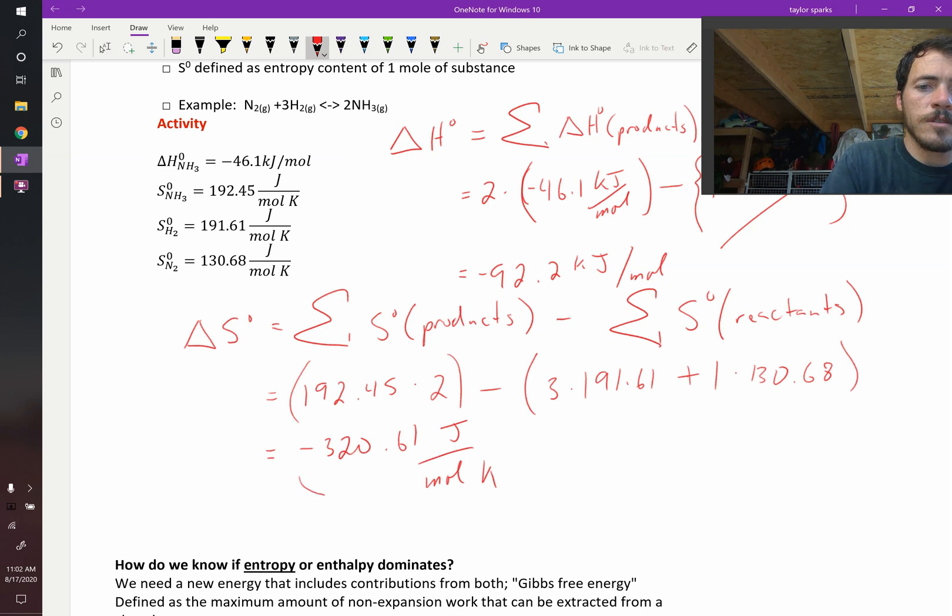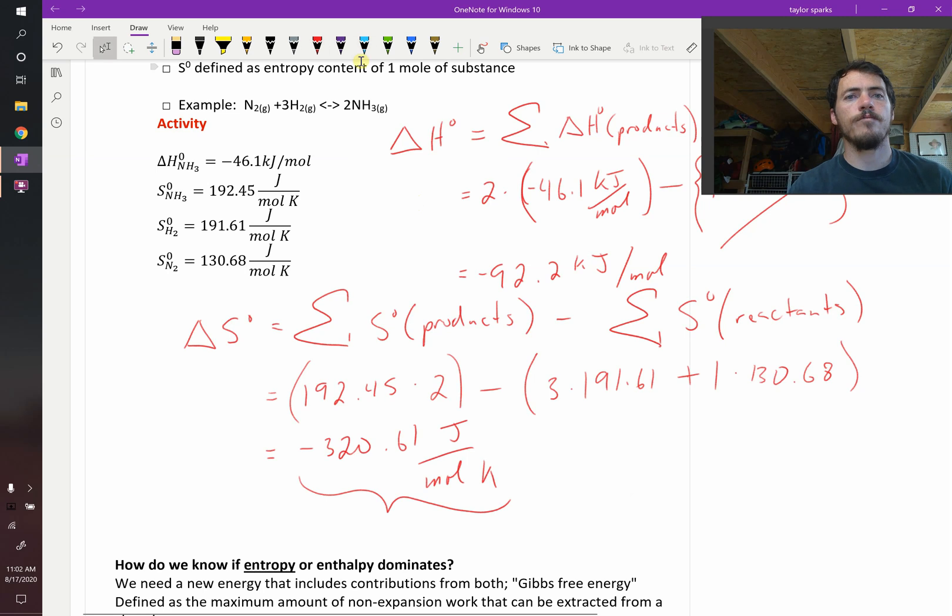So this tells us that the overall entropy change is negative. Think about it. We went down in entropy. Why? Because we started out with one mole of gas plus three moles of gas, so we had four moles of gas, and we condensed that into two moles of gas, so that became more ordered. Because it became more ordered, we know that entropy is not driving this reaction.